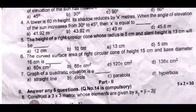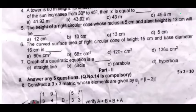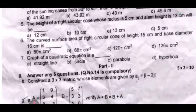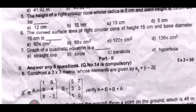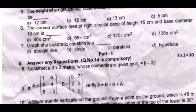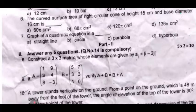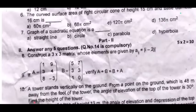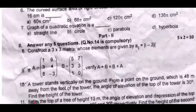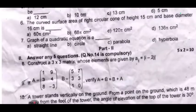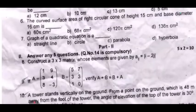Then x is equal to — dash. The height of a right circular cone whose radius is 5 cm and slant height is 13 cm will be — dash. The curved surface area of a right circular cone of height 15 cm and base diameter 16 cm is — dash. The graph of a quadratic equation is — dash.